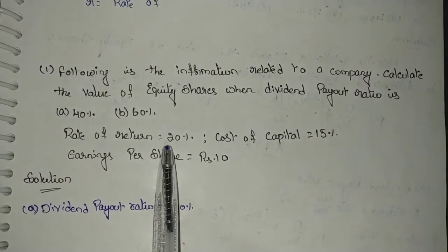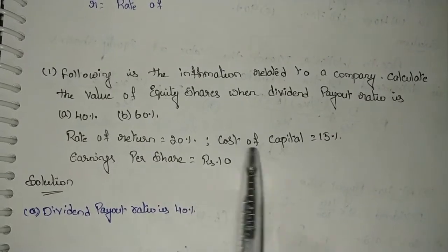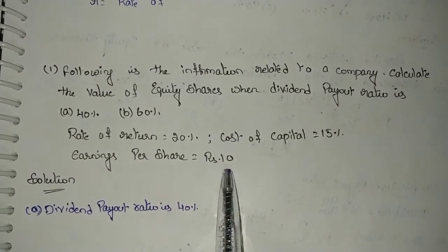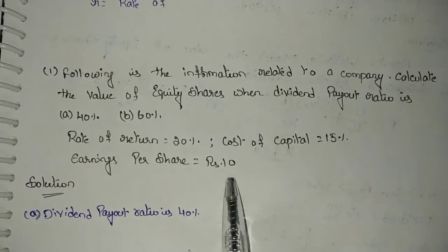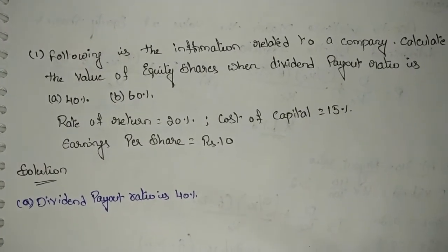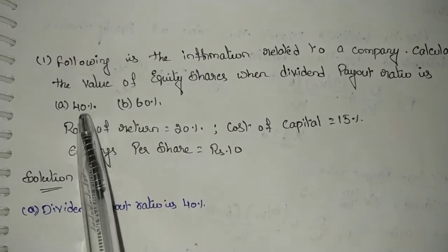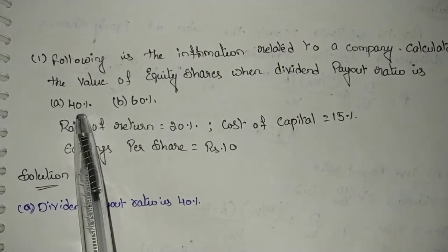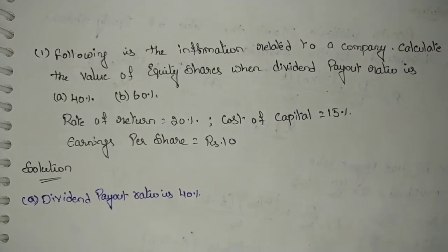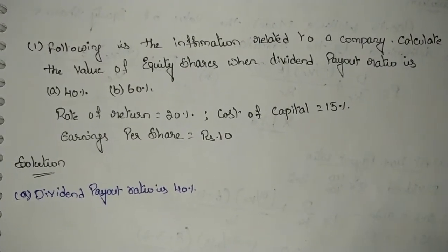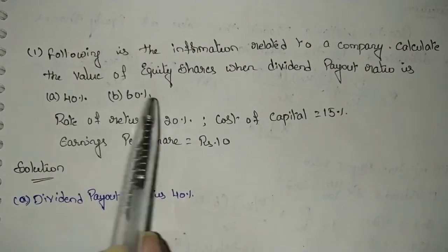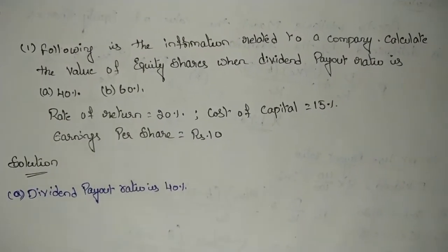In the problem, they have given: rate of return is 20%, cost of capital is 15%, and earning per share is 10 rupees. With this information, by using Walter's model, we have to calculate the value of equity shares at dividend payout ratio of 40% and also when the dividend payout ratio is 60%.